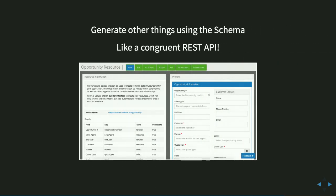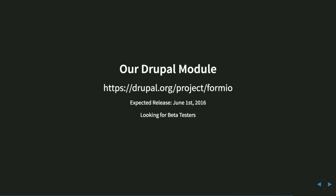By doing everything based on schemas, we're able to do things like those REST APIs behind it. When we were doing our Drupal module, it was pretty easy to just say: create an entity based on this schema and build it out. These REST APIs are then able to automatically update the back ends and the front ends all at the same time based on these schemas. Our Drupal module is at drupal.org/project/formio. It's going to be released probably around the end of the month — we are looking for beta testers, so come talk to us. Right now this is Drupal 7; once that's done we'll start working on the Drupal 8 module, which probably will be easier because we don't have to do all the REST API stuff.